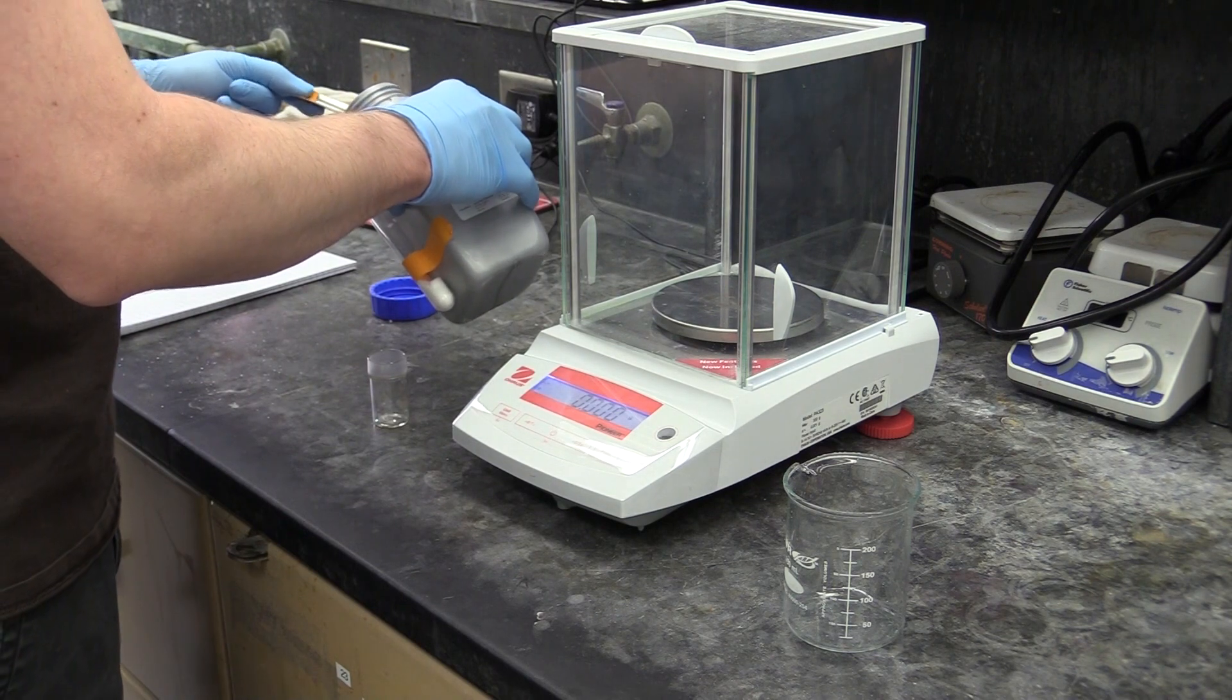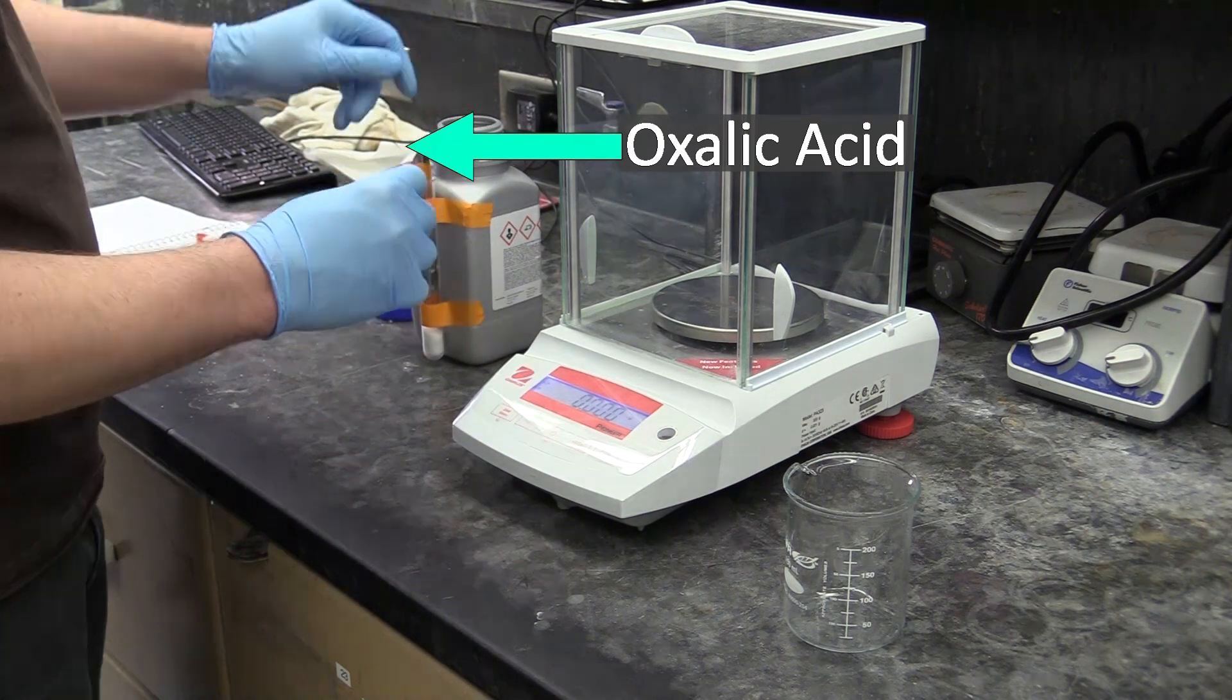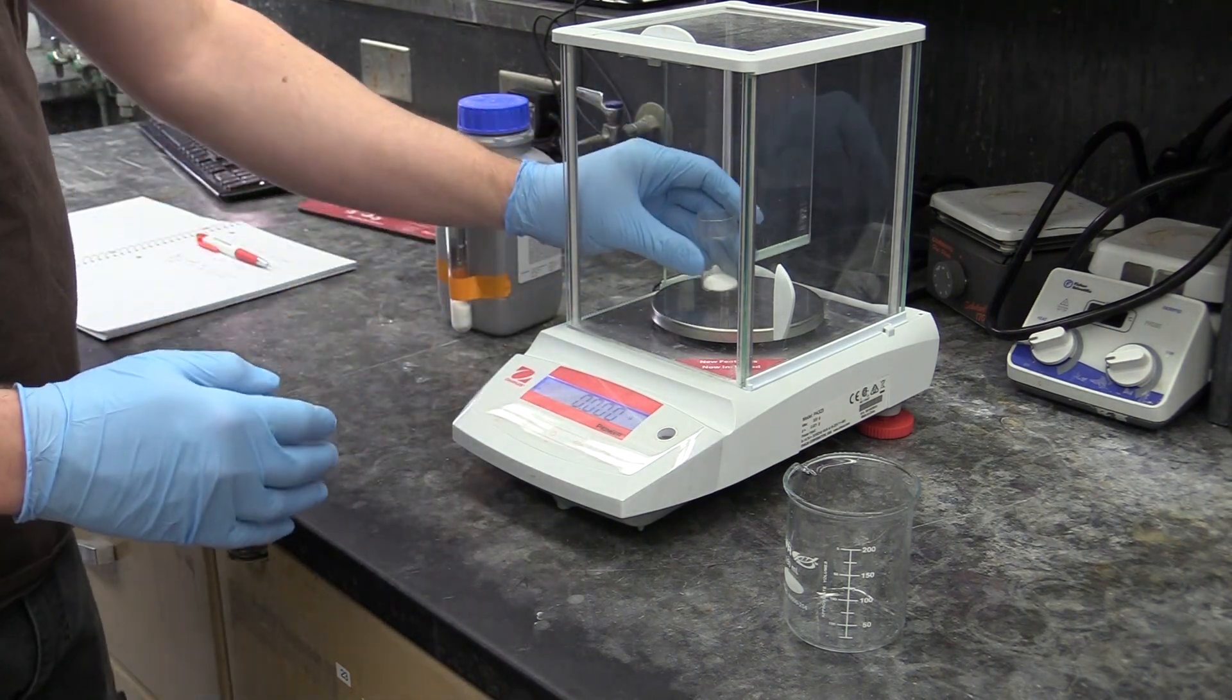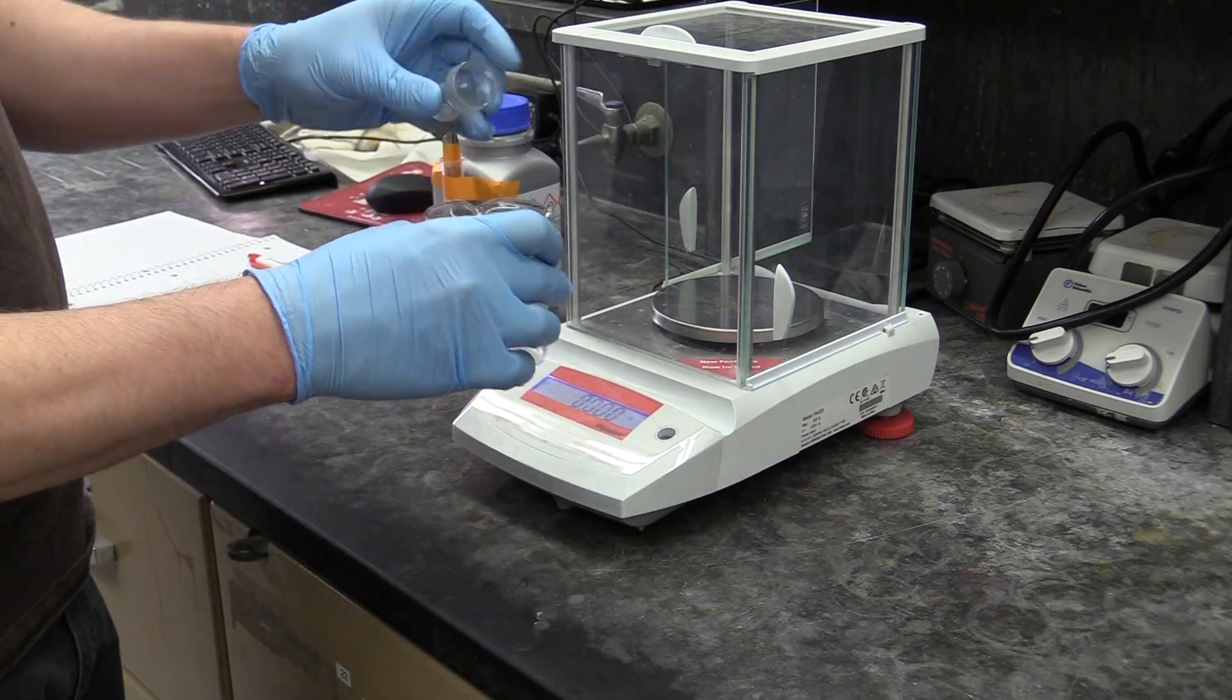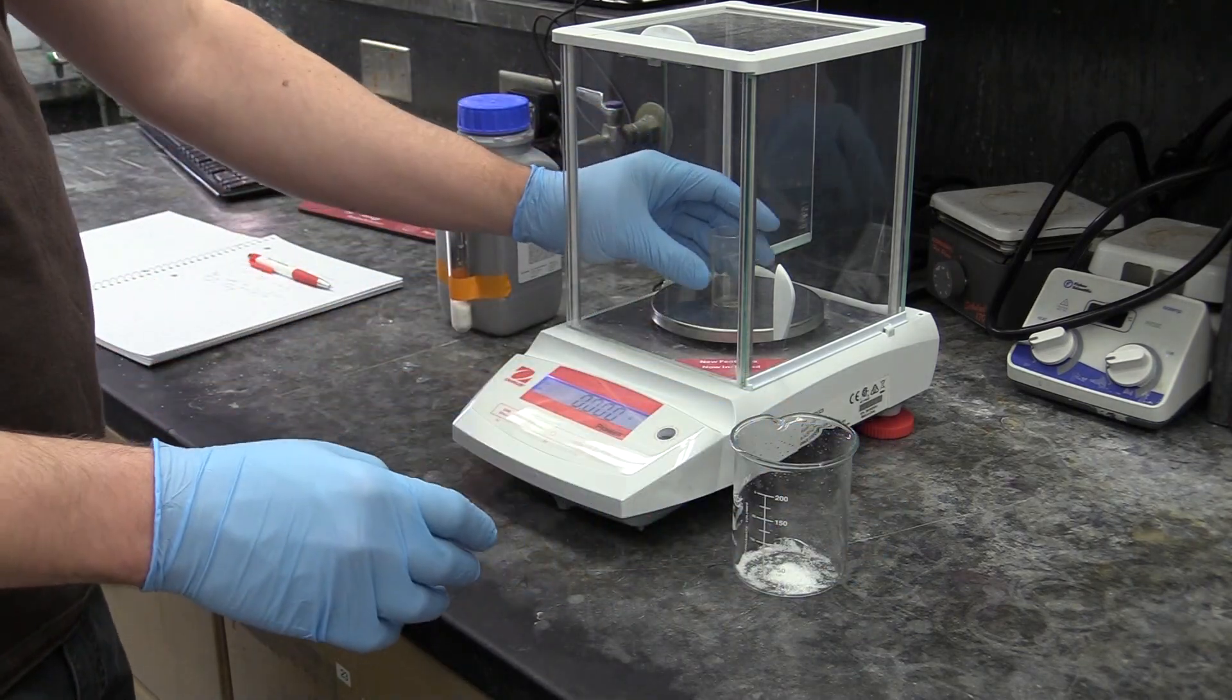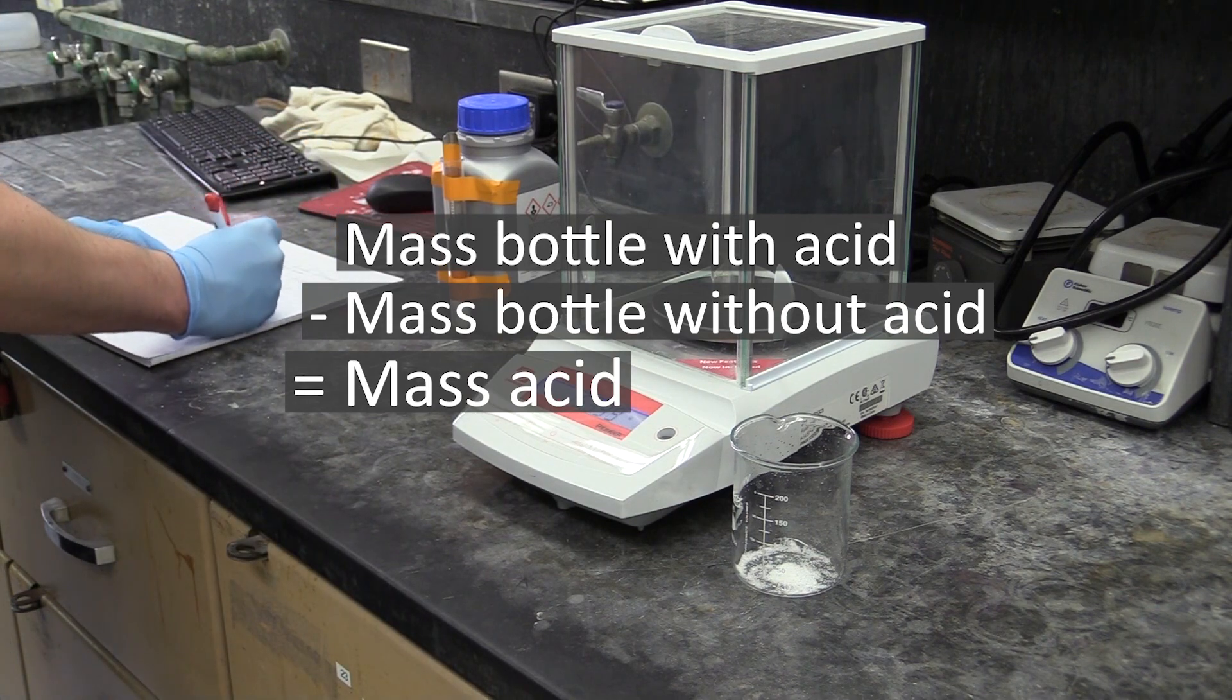First you will make a solution of oxalic acid by putting some solid oxalic acid into a weighing bottle, taking the mass of the bottle with the acid inside, dispensing it into a beaker, and re-weighing your bottle. In your post lab, you can use the two bottle masses to calculate how much acid you've used.